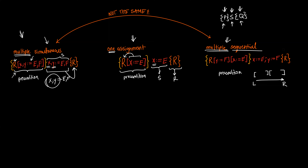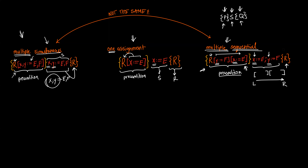For multiple sequential assignments, your precondition is calculated in a specific order. An important thing to notice is that if the assignments appear as x followed by y, when calculating the precondition you start with y and then do x — the reverse order. This matters because they are performed left to right, so swapping the order changes the result. You always take your program, apply it to the postcondition, and that gives you a valid precondition, but you perform the substitutions sequentially rather than simultaneously.